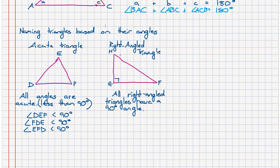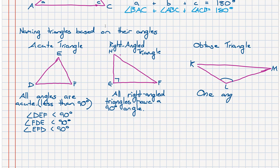It doesn't matter what the other two angles are, so long as there's a right angle in there — we call that a right-angled triangle. The final triangle has an angle inside it that is not acute but rather obtuse, so we call that an obtuse triangle. In summary: all angles less than 90 degrees is acute; at least one right angle is a right-angled triangle; at least one obtuse angle is an obtuse triangle.